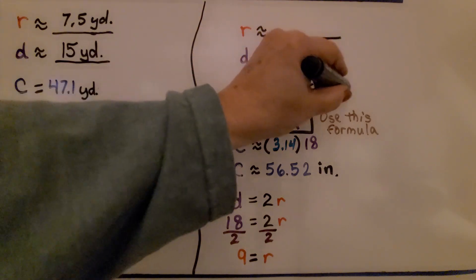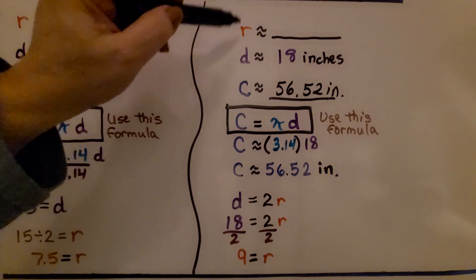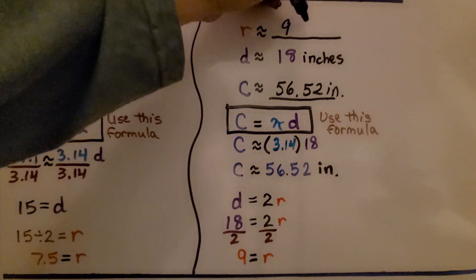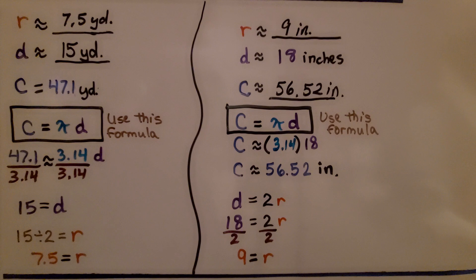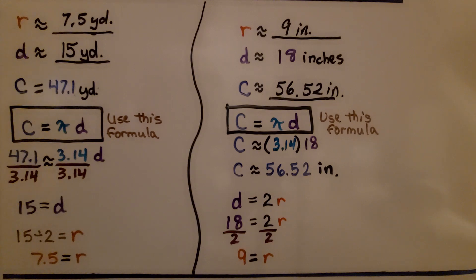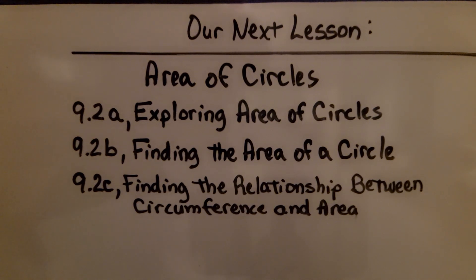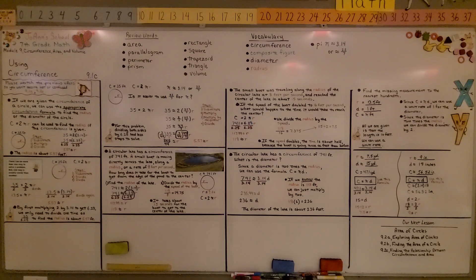The circumference is 56.52 inches. The radius is half the diameter, so half of 18 is 9 inches. We were able to complete these using the formula and some common sense. We're finished with lesson 9.1 and moving on to 9.2, which is about area of circles. Remember to be careful not to confuse diameter numbers with radius numbers. Have a great day, and join me for our next lesson!